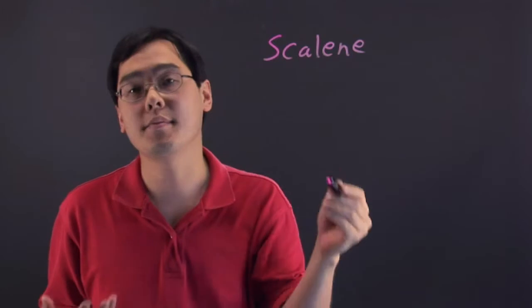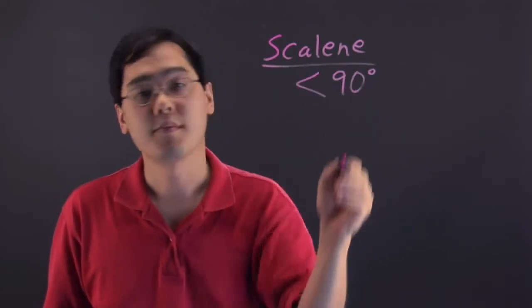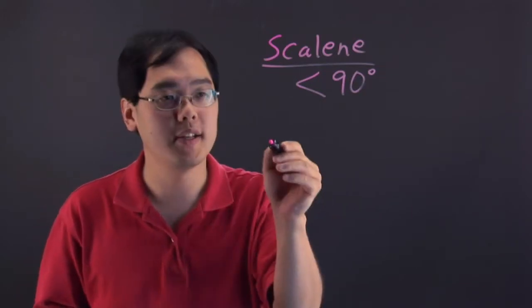Now scalene, anytime you see that, you're talking about angles that are less than 90 degrees. So you often find them in scalene triangles, but they can be thought about as standalone angles.